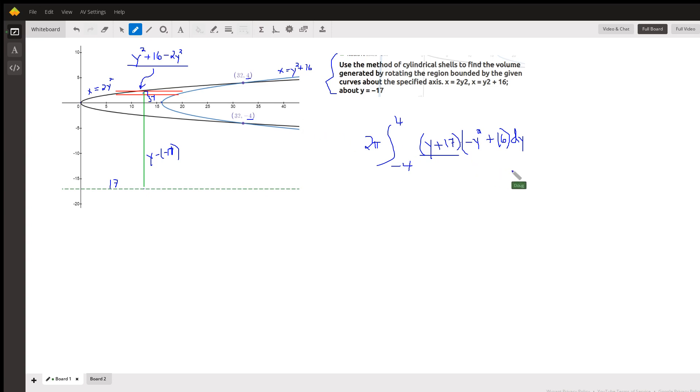And then we want to multiply that times the height of a typical shell, which is the distance from here to here, which that's the x-coordinate at the right, which is y-squared plus 16. That's what x equals. Take away the x-coordinate at the left, which is 2y-squared. So this is the height of the shell, which you can combine the y-squared and the minus 2y-squared.